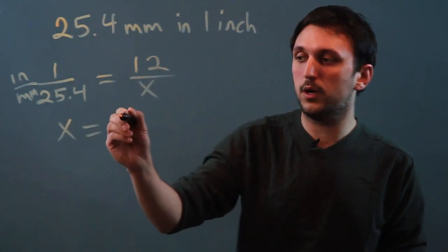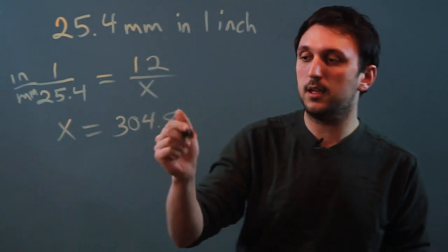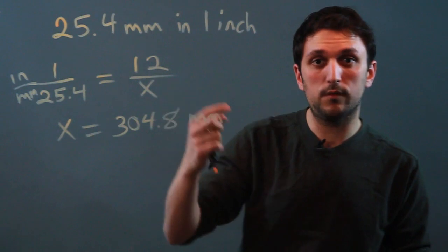25.4 times 12, which is 304.8, and that is how many millimeters are in 12 inches, or 1 foot.